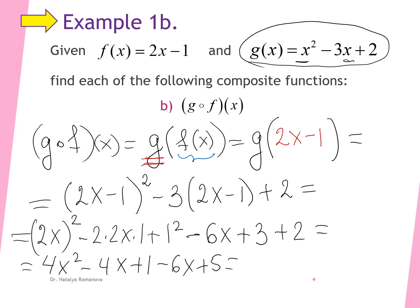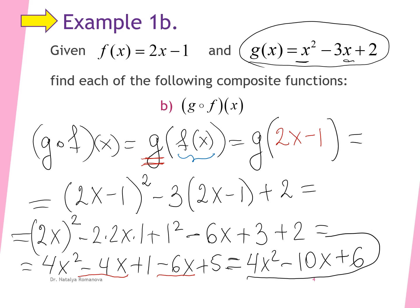We combine like terms: negative 4x and negative 6x give us negative 10x, and 1 plus 5 gives us 6. So the composition of g and f of x equals 4x squared minus 10x plus 6.